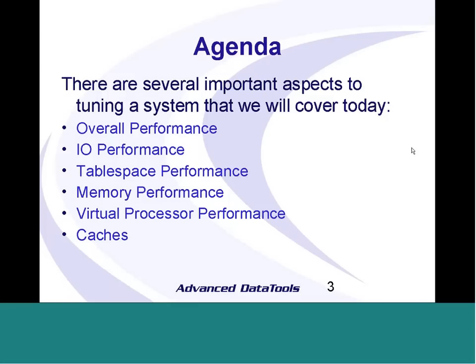There are several important aspects to tuning a system that we're going to cover today. They include the overall performance of the system — how everybody perceives the system to be running. If everybody's happy with how it's running, maybe there's nothing wrong. We'll look at I/O performance, performance of individual tablespaces, performance of memory, and performance of individual virtual processors and the different caches in the system.